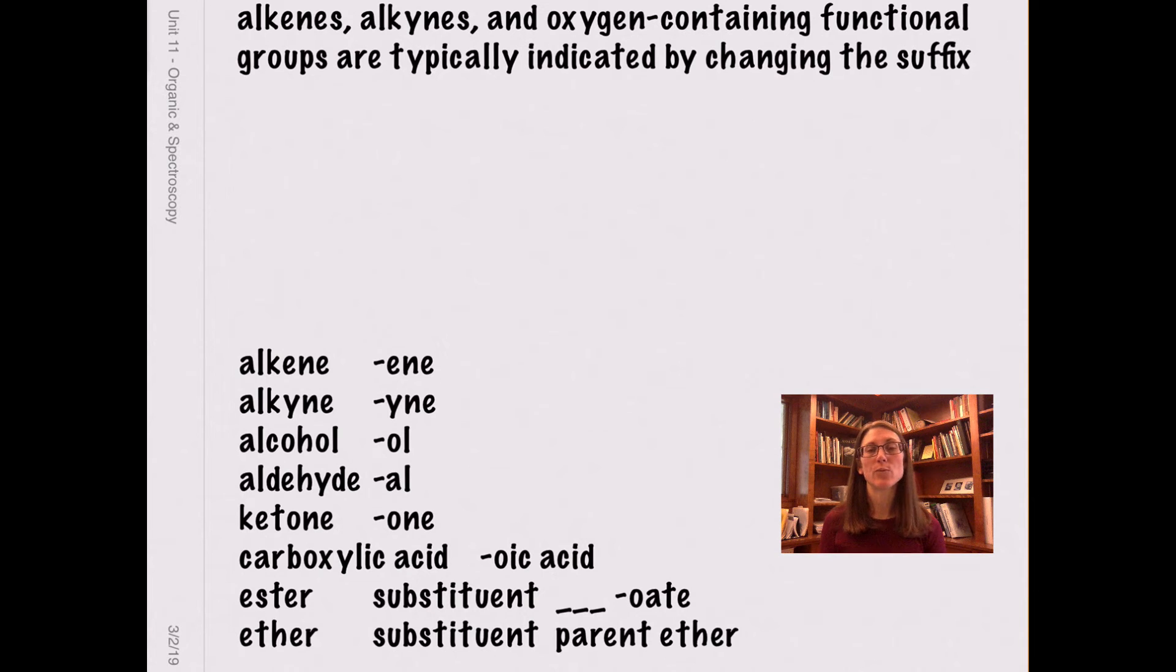We're going to do lots of practicing in class with all the other different functional groups. But as we start adding additional functional groups like alkenes, alkynes, alcohols, aldehydes, ketones, all of that, we're going to start changing the ending. And each of these functional groups has a different ending. So I've given you a list on the bottom left of the screen here. Copy it down, you're going to need it. And I'm just going to do a single example here because we're going to do lots more examples in class and lots of practice in class.